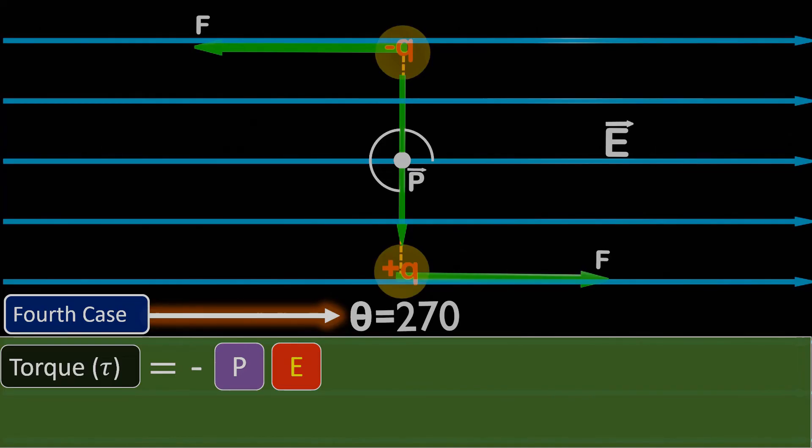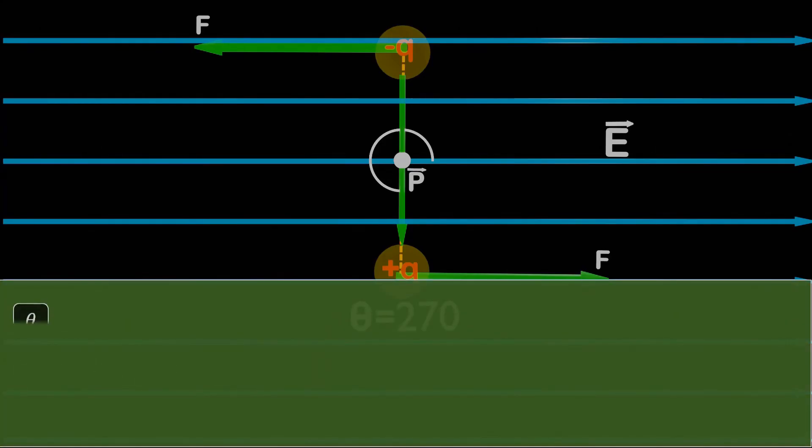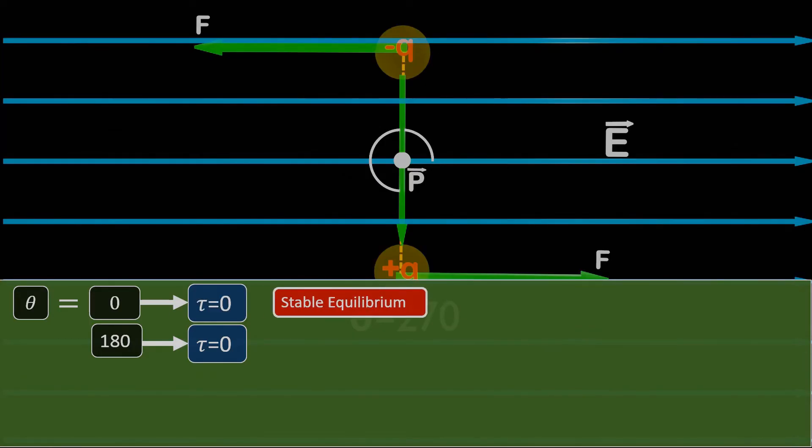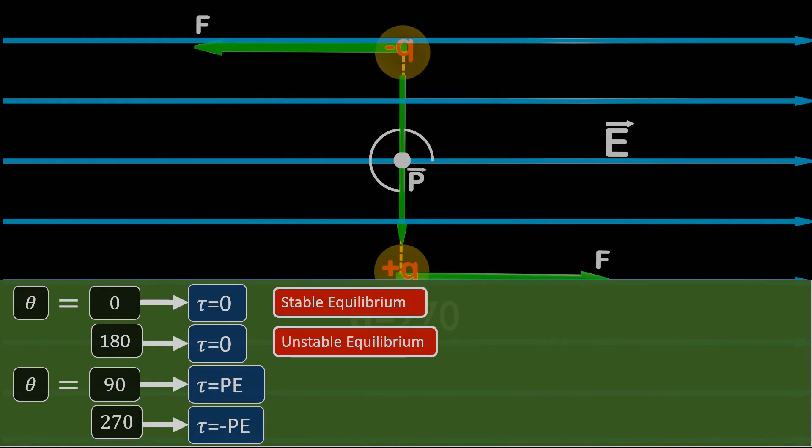So far, we have seen that at theta equals 0 and 180 degrees, the torque on the dipole is 0. At 0 degrees, dipole is in stable equilibrium, while at 180 degrees, it is in unstable equilibrium. And at theta equals 90 and 270 degrees, the torque is maximum in magnitude, but opposite in direction.